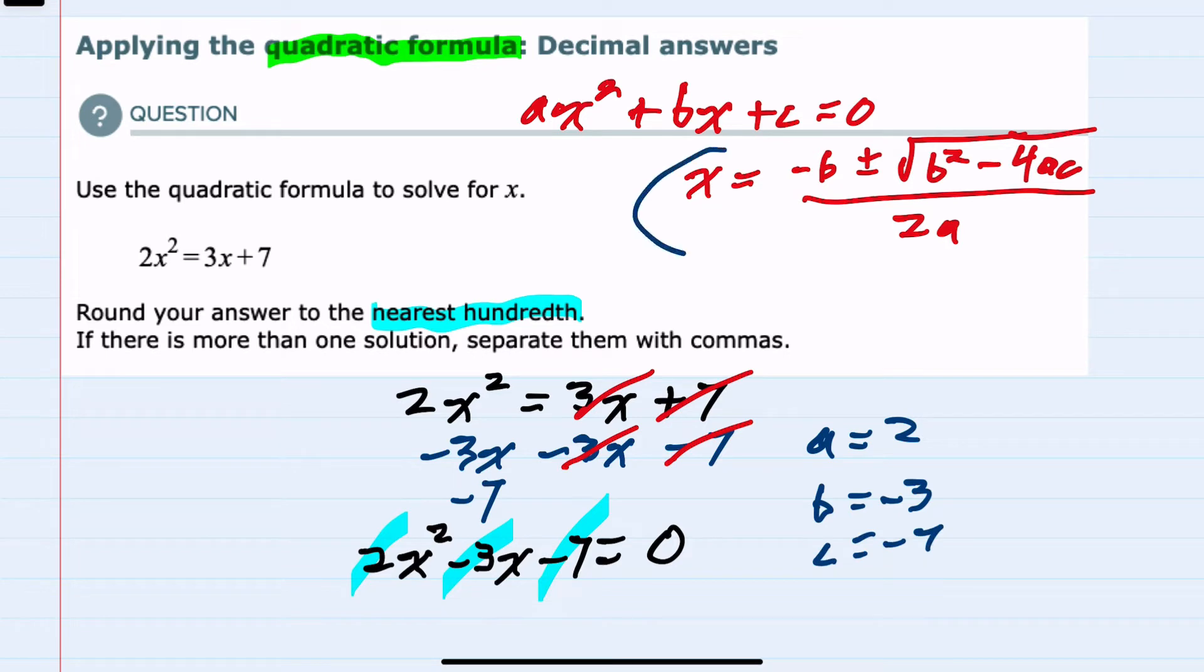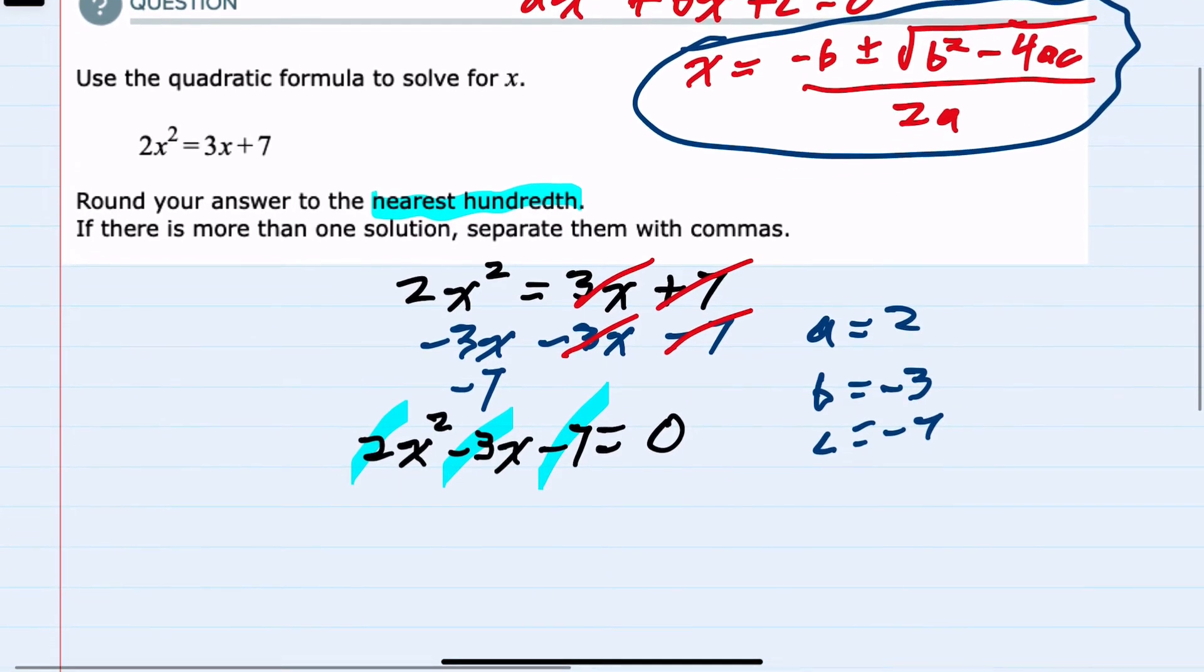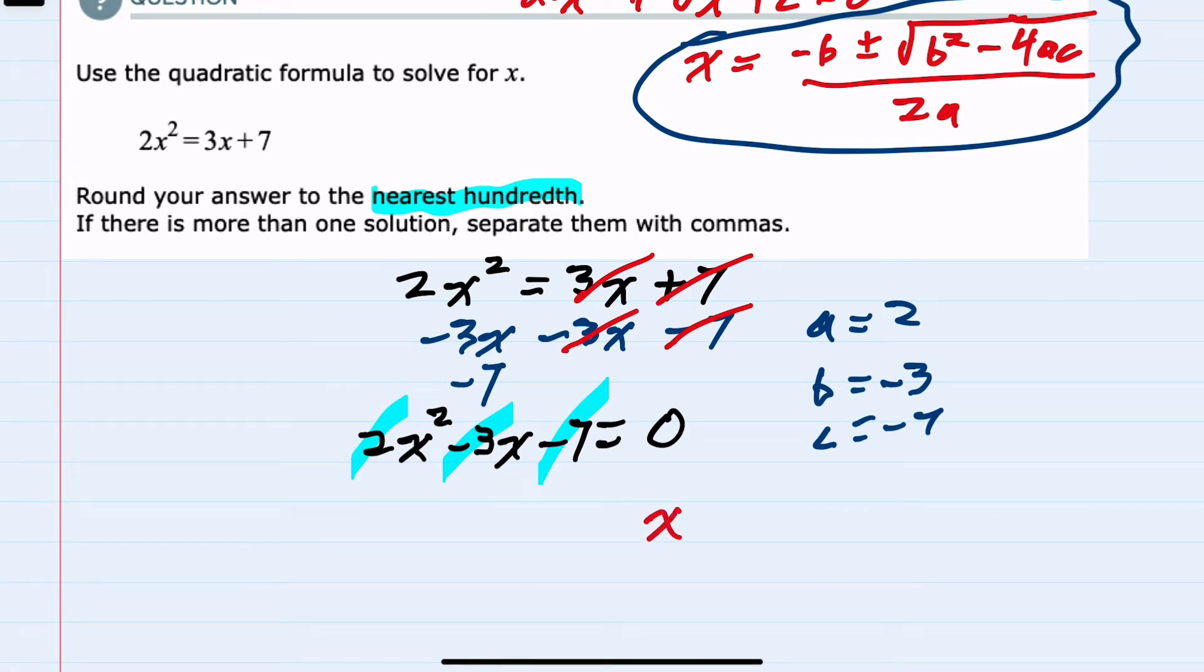From here we can plug into the quadratic formula to find the values for x. So our x will be negative b, and since b is negative 3, the negatives will cancel and we have just a positive 3,